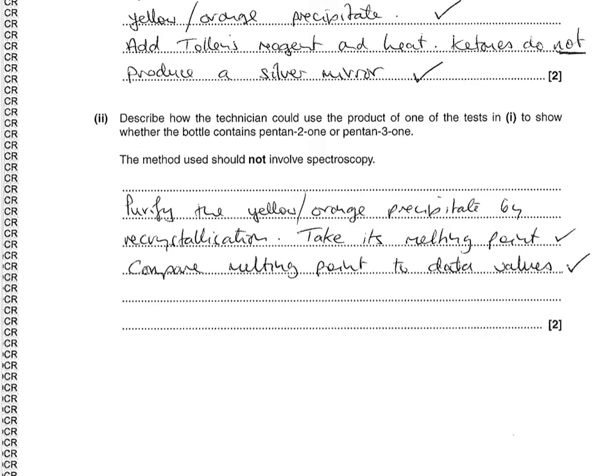The second part of this question then says we've identified it as a ketone. Now which one is it - pentan-2-one or 3-one? We've got to come up with a method that must not involve spectroscopy. What they're after here is that you would purify this yellow-orange precipitate from the 2,4-DNP.